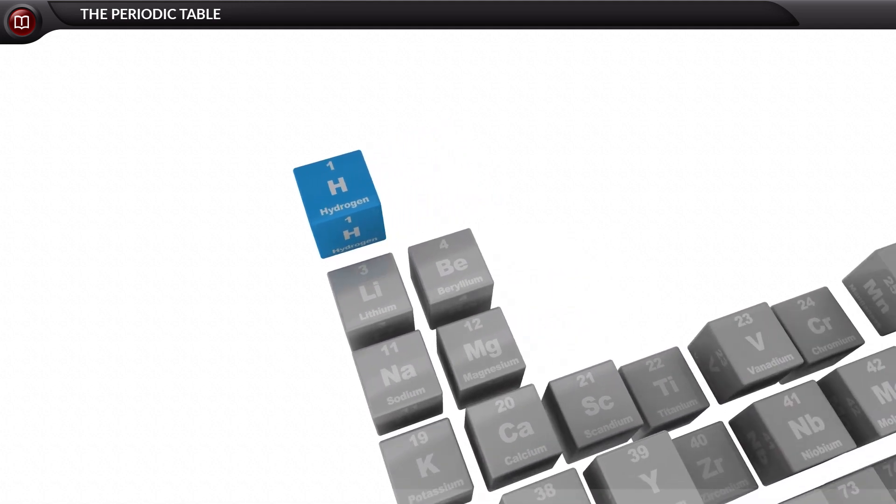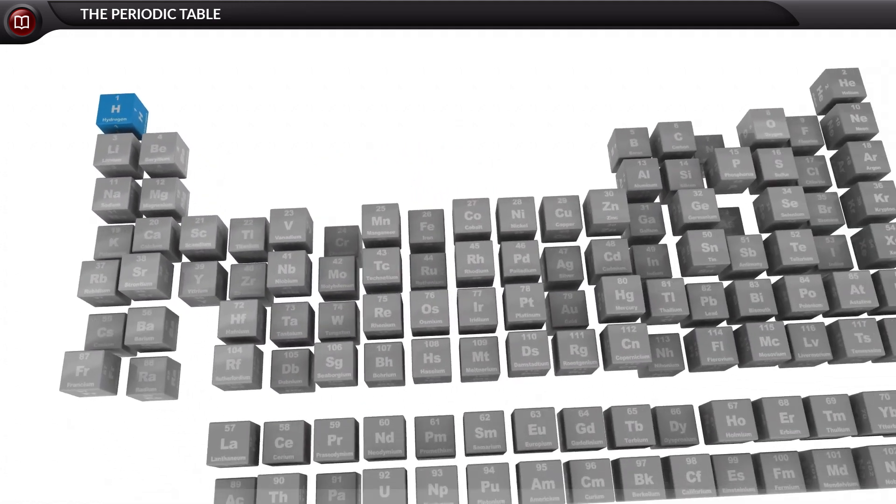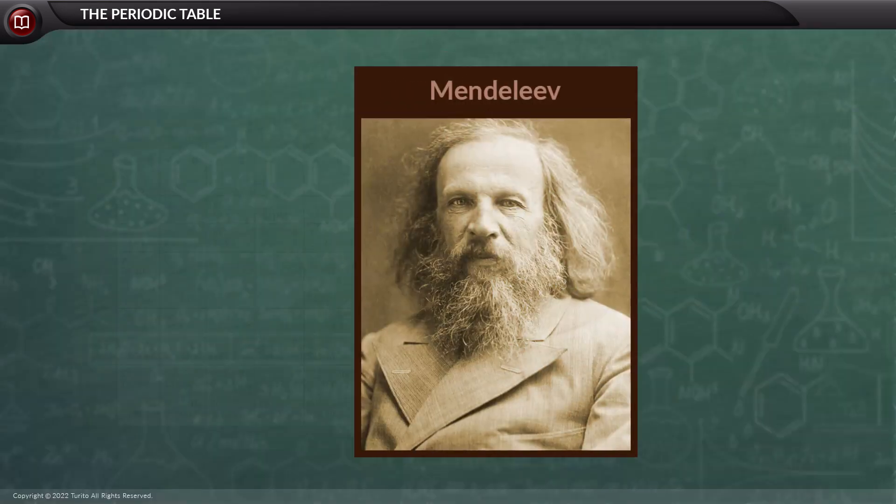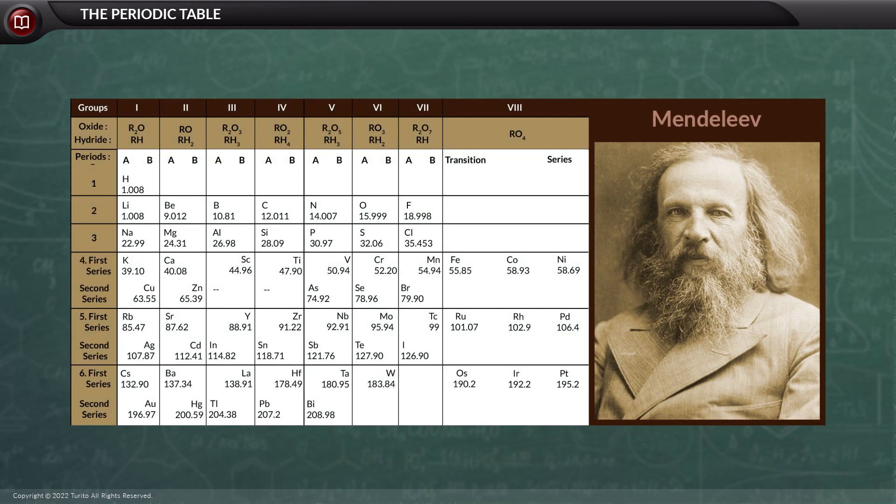Let us today discuss the modern periodic table. When Mendeleev framed his periodic table, there was hardly anything that was known about the structure of an atom.